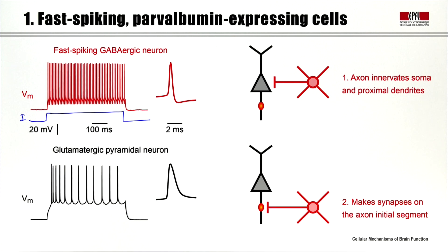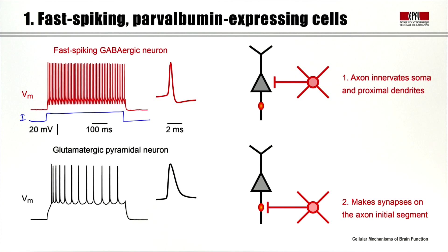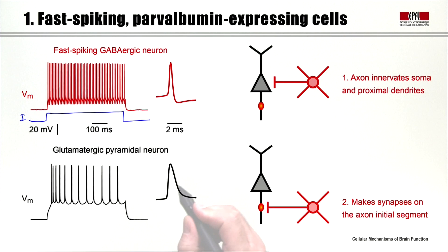Some hundreds of hertz are the maximum firing rates of the fast-spiking GABAergic neurons. If we zoom in on each individual action potential, we'll see that they have fast waveforms, and the AP half-width is something like 300 microseconds. That contrasts with the glutamatergic excitatory pyramidal cells, where the maximal firing rates are much lower — about an order of magnitude lower — and each individual action potential has a broad waveform lasting more than a millisecond.